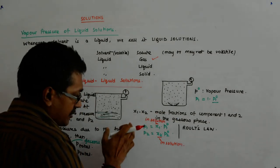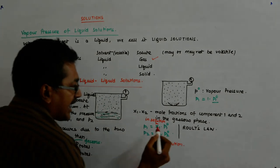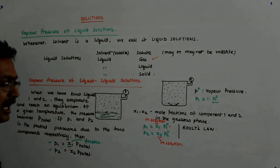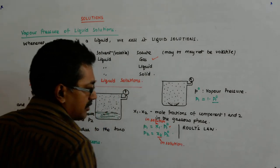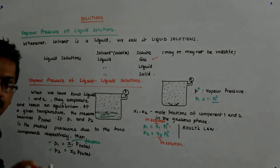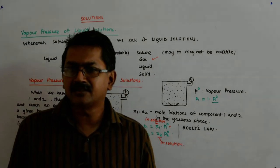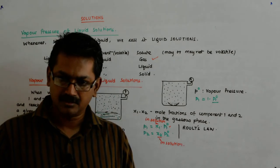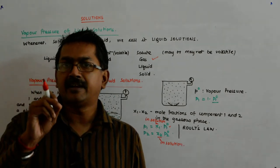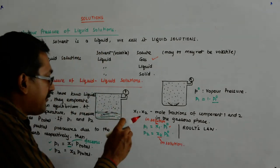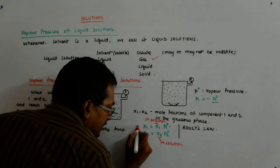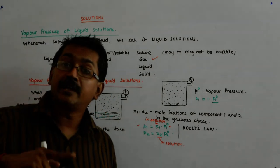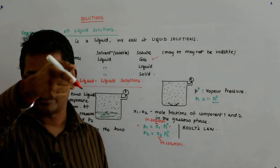And this equation is found to be correct. Now, I know P1° — it is measurable. I know x1 because I can see the mole fraction of the two liquids that I have mixed. So in effect, I will be able to know this partial pressure that it is going to contribute in the vapor phase.